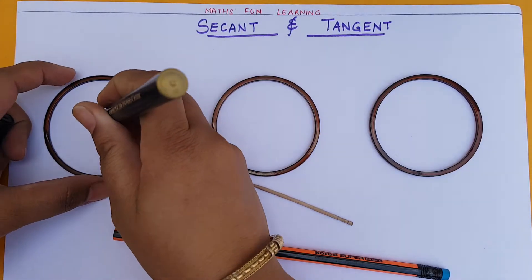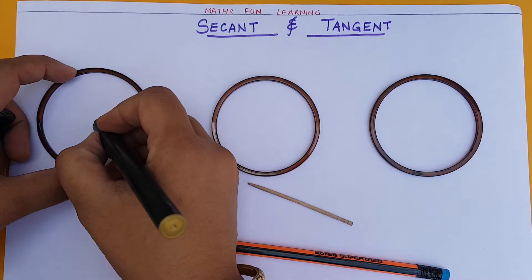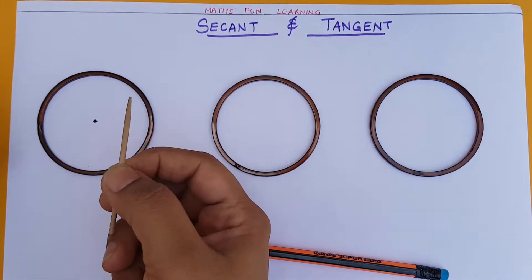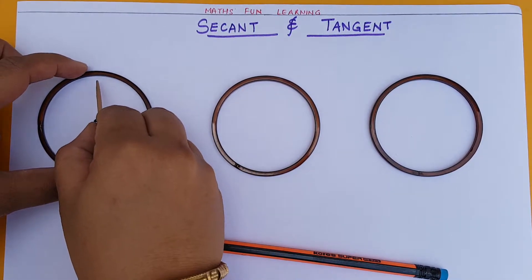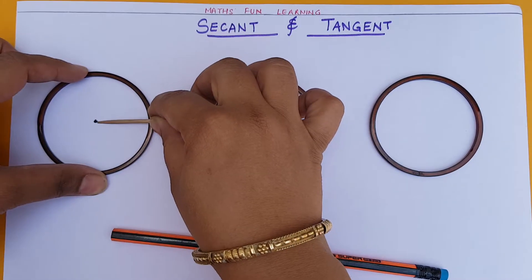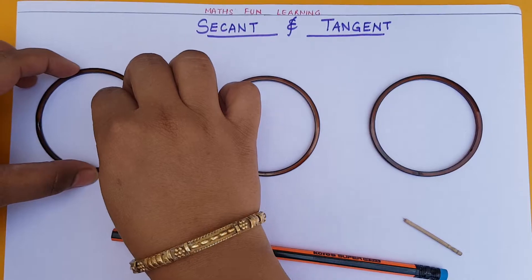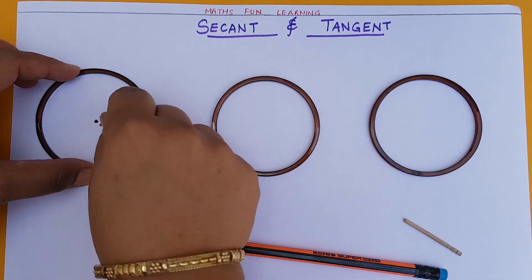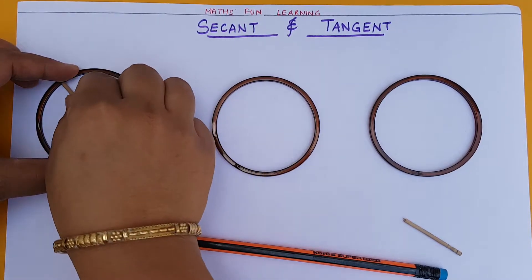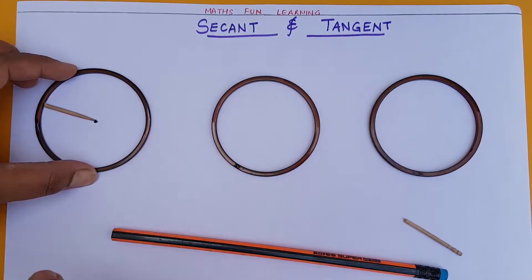This is the center point of my circle. If a line segment joins the center to the boundary of the circle, that is called a radius. Let me take the stick and cut it. You can find that from the center to the boundary the radius is the same everywhere — from every side the radius will be the same.